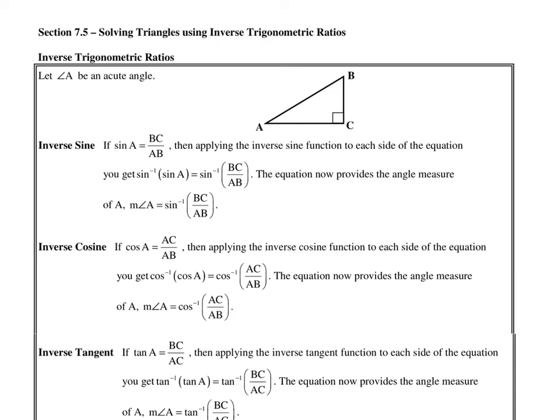Lesson 7.5: solving triangles using inverse trigonometric ratios. Inverse is the key idea in this lesson. When working with trig ratios, we're only working with the acute angles of the triangle, so we're focusing on angle A for this explanation.